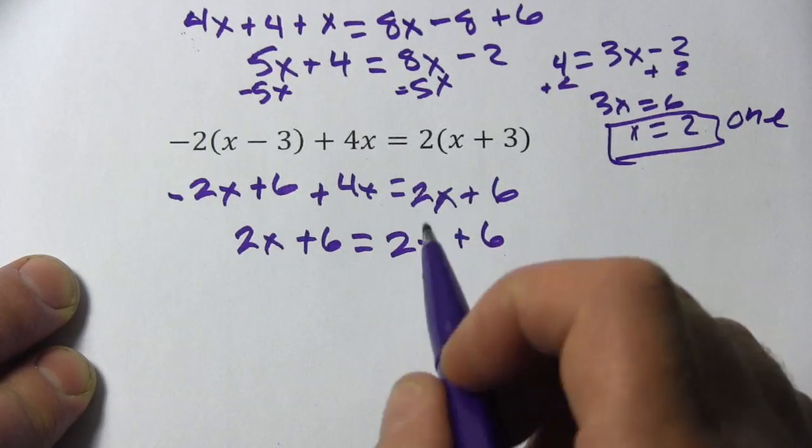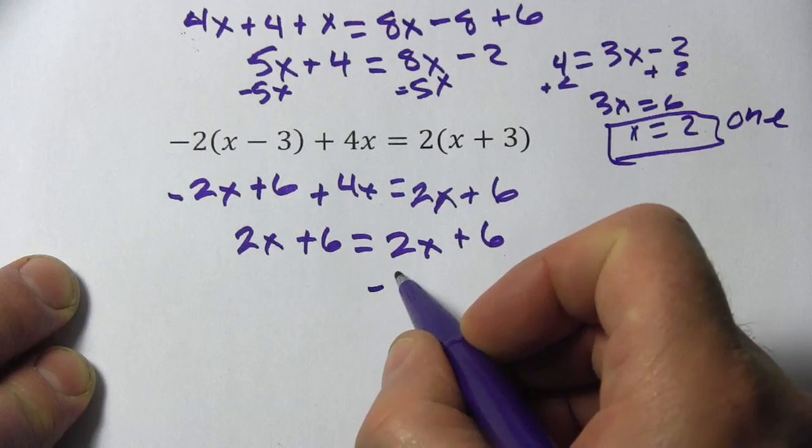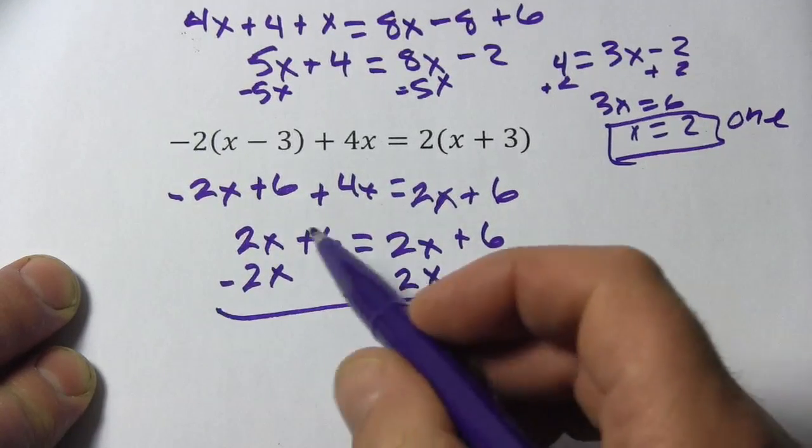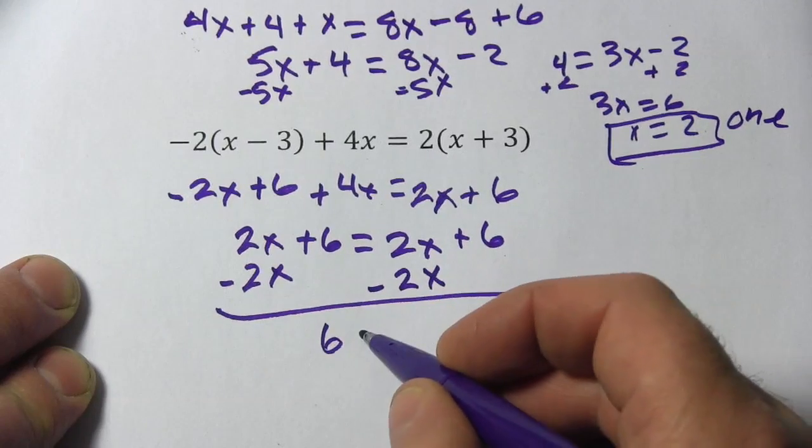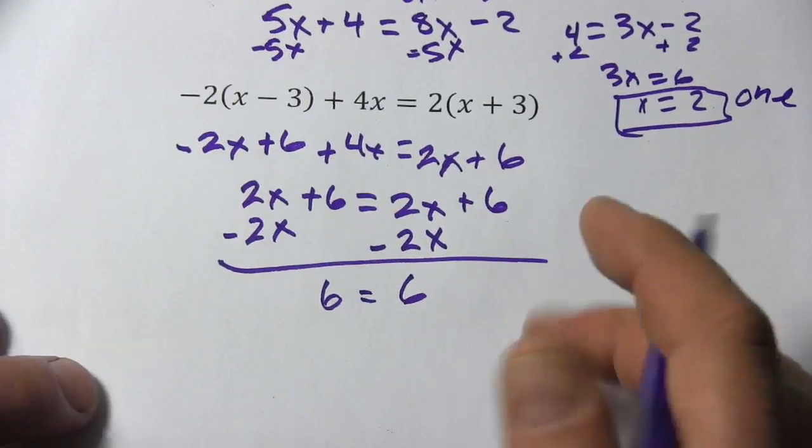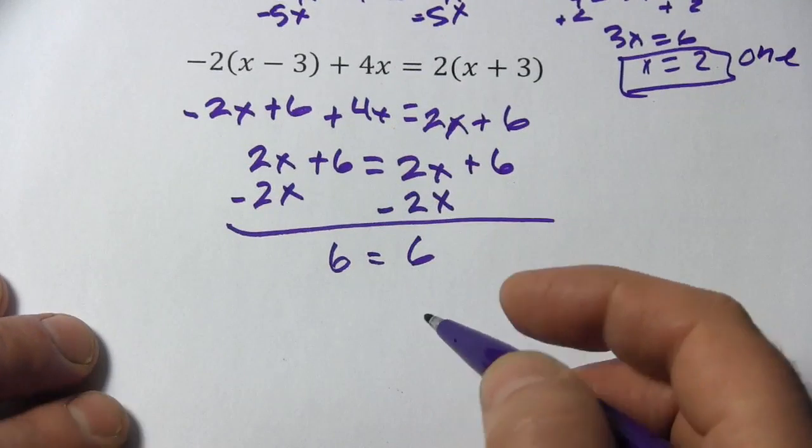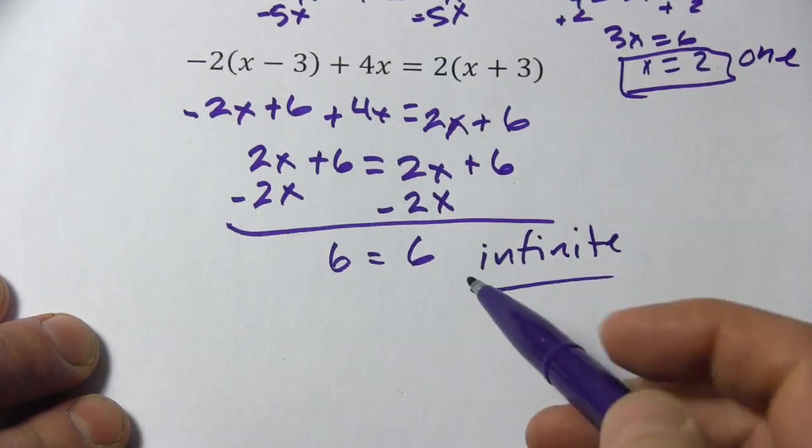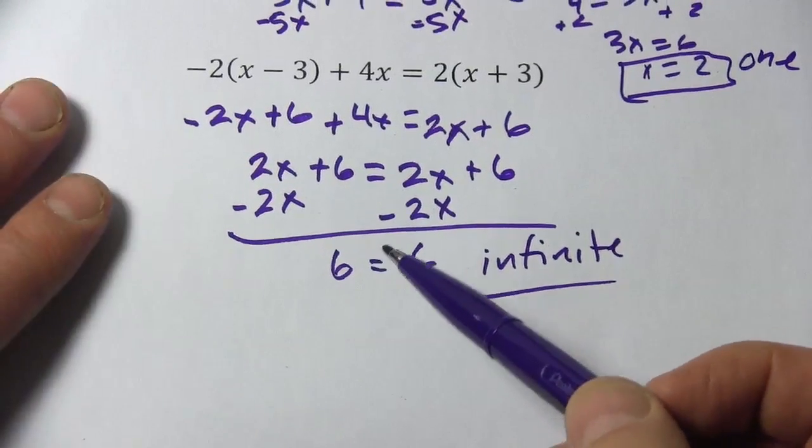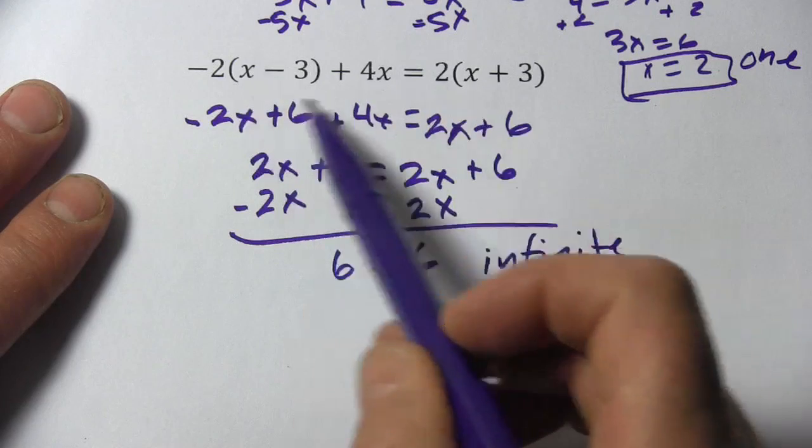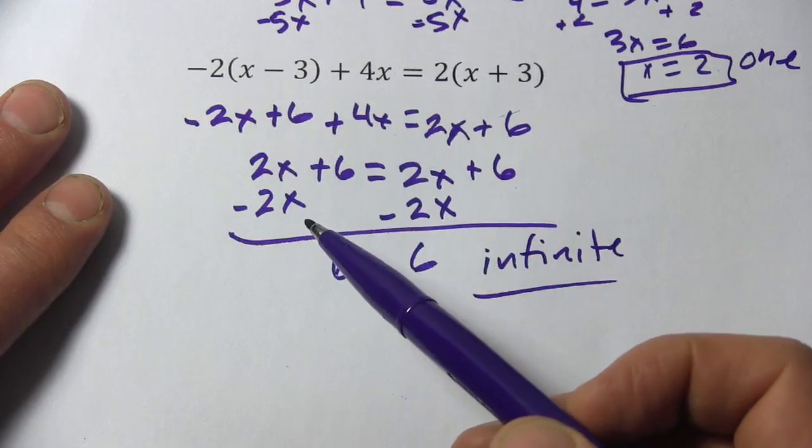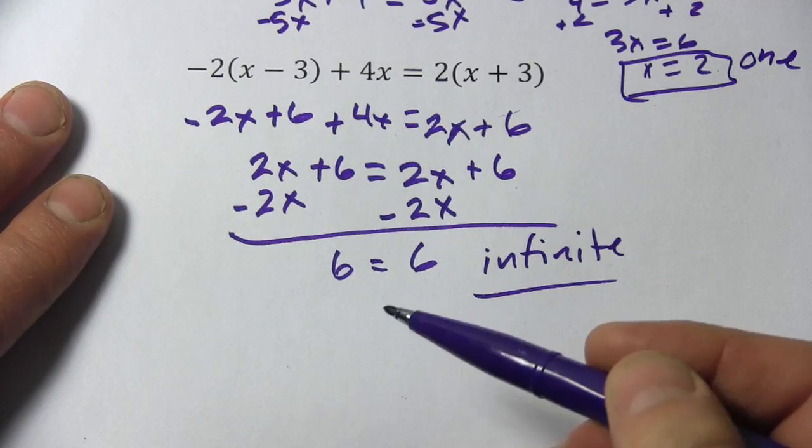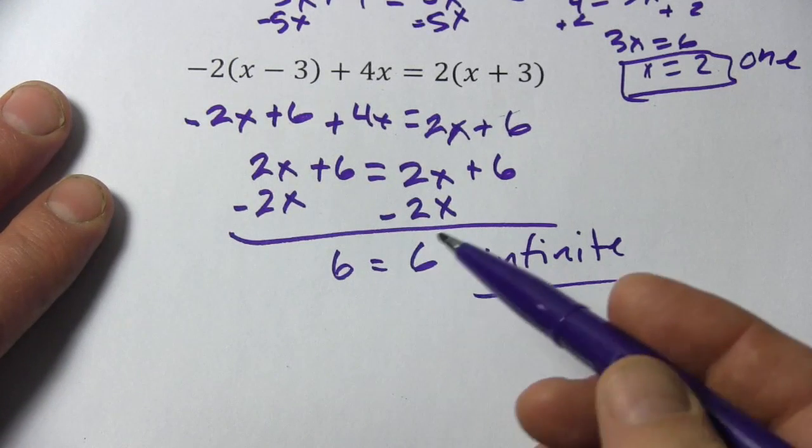If we go forward and try to solve, we try to get rid of the x's on one side by subtracting 2x over here. If I do that, all our x's disappear. They go to 0. And we get 6 equals 6. Now that is a true statement. 6 does equal 6. What this means is you have infinitely many solutions for this equation. Any number you plug in for x here is going to cause this statement to be true. So that's a little bit of work in figuring out whether an equation has 0, 1, or infinitely many solutions.